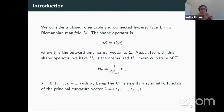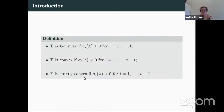In this presentation, we will consider a closed, orientable, and connected hypersurface sigma in a Riemannian manifold M. The shape operator is given like that, where D is the Levi-Civita connection of M, and X is the outward unit normal vector to sigma. Associated with the shape operator, we have the normalized k-th mean curvature of sigma, given like that, where k is at most N minus 1, and sigma_k is the k-th elementary symmetric function of the principal curvature vector lambda.